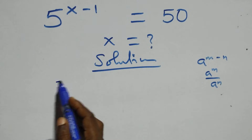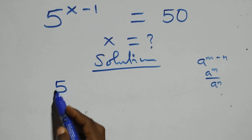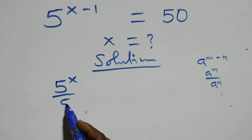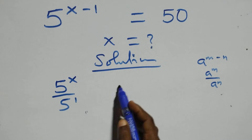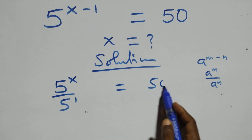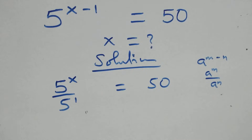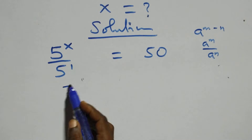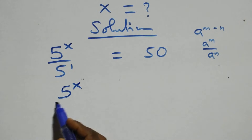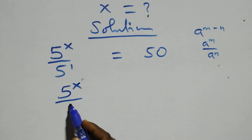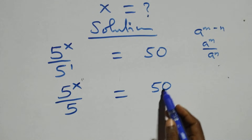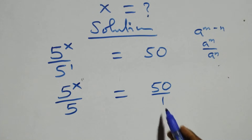What we have here is 5 raised to power x over 5 raised to power y equals 50. We can write this as 5 raised to power x over 5 raised to power 1, and that 5 equals 50 over 1.